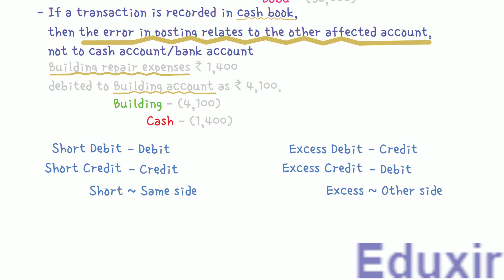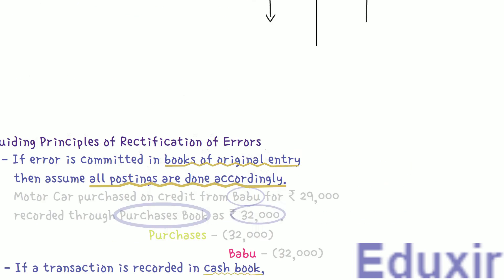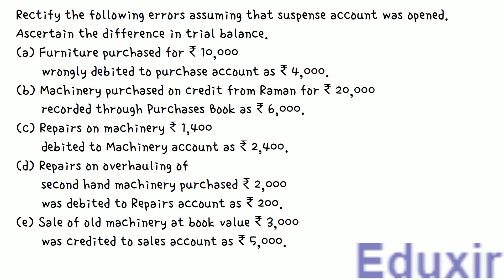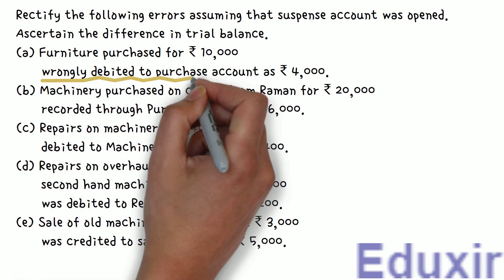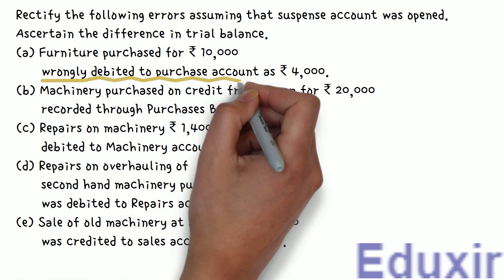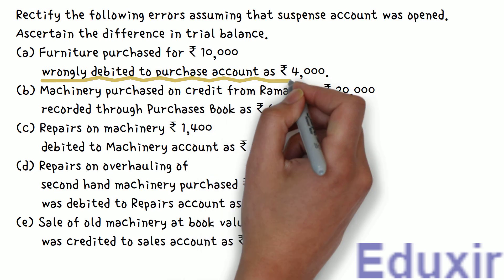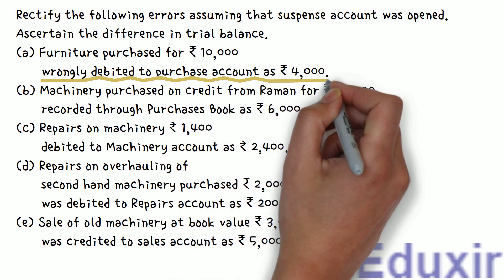With this information at our disposal, let us now proceed with the analysis of each of the errors in the given problem. In this problem, we are supposed to prepare a suspense account. Let us start with the analysis of the first error. In this case, 10,000 rupees of furniture purchased was wrongly debited to purchases account as 4,000 rupees.